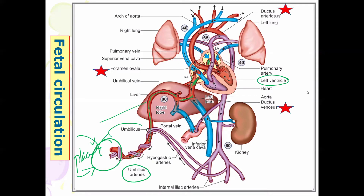The most oxygenated blood goes towards the brain and the upper part of the body, and less oxygenated blood goes to other parts, because the brain is very important for development. Some blood from the umbilical vein ultimately goes to the right atrium and then to the left atrium. From the pulmonary trunk, it is again shunted because the lungs do not need much blood — ductus arteriosus is another shunt. So there are three shunts: foramen ovale, ductus arteriosus, and ductus venosus.